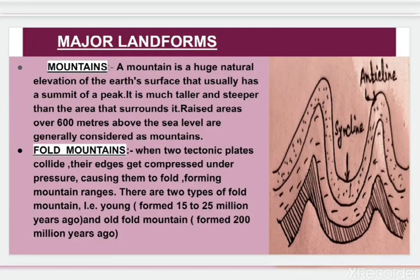In the next major landforms, we will learn about mountains. A mountain is a huge natural elevation of the earth's surface that usually has a summit or a peak. It is much taller and steeper than the area that surrounds it. Raised areas over 600 meters above sea level are generally considered as mountains.